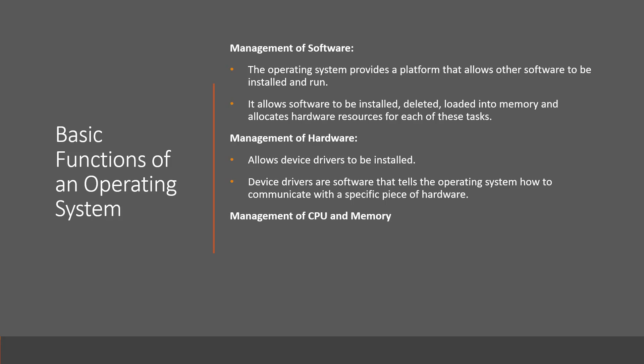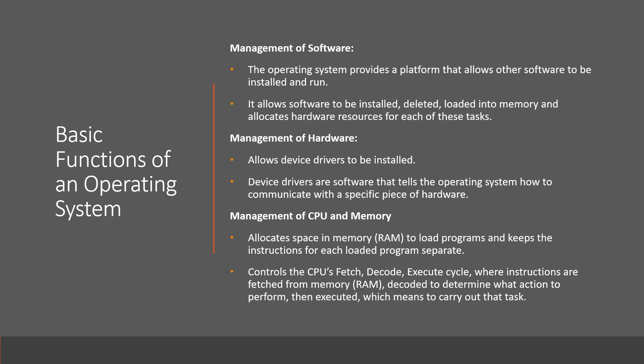Finally, it manages the CPU and memory. When a program is loaded, it needs to be loaded from the hard disk drive into RAM, or random access memory. The operating system creates space for the program to be loaded, and then it makes sure that it's separate from any other program that's already loaded. It also controls the CPU's fetch, decode, and execute cycle, where instructions are fetched from memory — which is RAM — they're decoded to determine what action to perform, and then they're executed, which means to carry out that task.